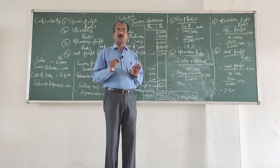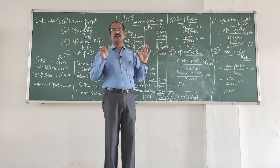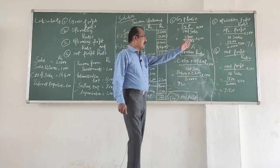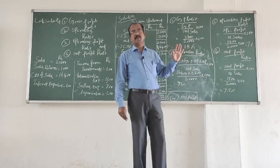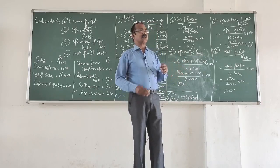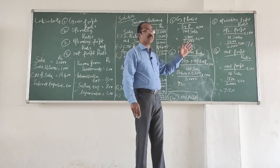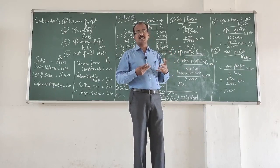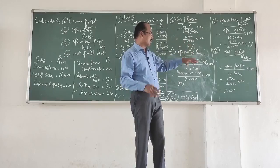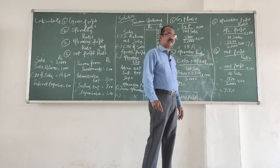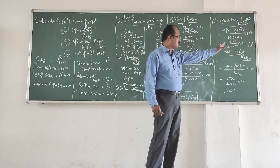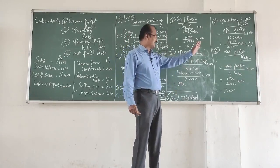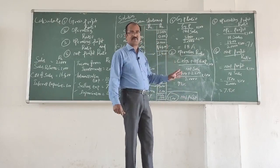If the operating ratio is 93%, the remaining 7% out of 100 is the operating profit ratio. The formula for operating profit ratio is: operating profit divided by net sales, multiplied by 100. It tells us the percentage of profit generated through the main operations. 1,400 divided by 20,000 multiplied by 100 gives 7%, confirming our calculation is correct.